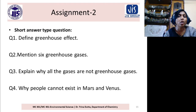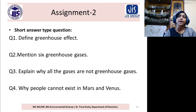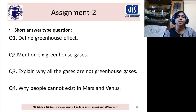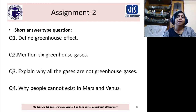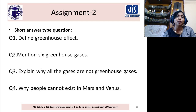Explain why all gases are not greenhouse gases: the gases which are IR active and can absorb the Earth radiation are the only greenhouse gases. O2 and N2 are not greenhouse gases. Why can people not exist on Mars and Venus? On Mars there is too low a temperature, and on Venus too high a temperature, so life does not exist in both cases. Greenhouse effect is required but at a certain limit.